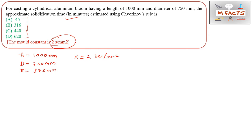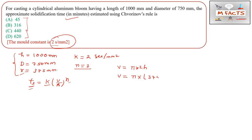Applying the formula ts = k(V/A)^n with n = 2. First, find volume: V = π r² h = π × (375)² × 1000. This gives V = 441,562 × 10³ mm cubed. Writing units throughout helps avoid silly mistakes.